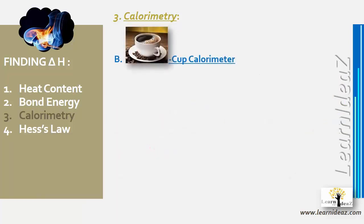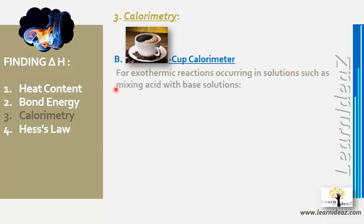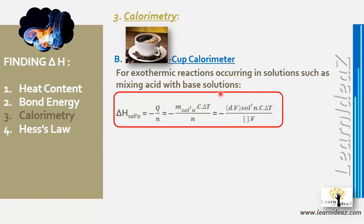For exothermic reactions in solution — such as mixing acid with base — delta h = −q / n = −mc × delta t / n, where m is the total mass of the solution. If the volume and density are given instead of mass, then m = density × volume.